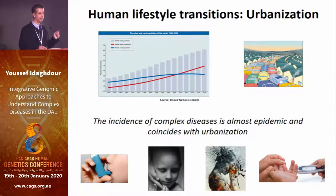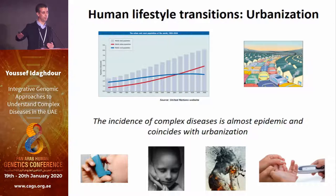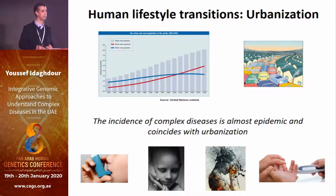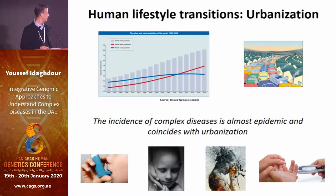Linked to some of what we discussed this morning, we've seen this massive transition in human lifestyles. In the last few decades, the number of people who live in urban settings is more than those who live in rural or traditional environments, and you've seen the talk from South Africa this morning. It coincides with elevated incidence or prevalence of cardiovascular disease, cancer, asthma, and depression. Most complex traits have something to do with this environmental transition.